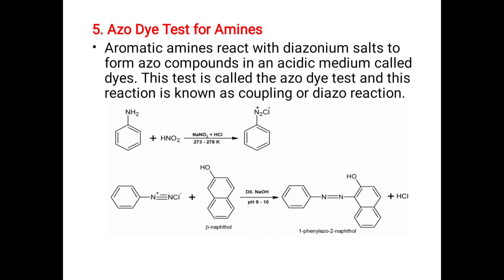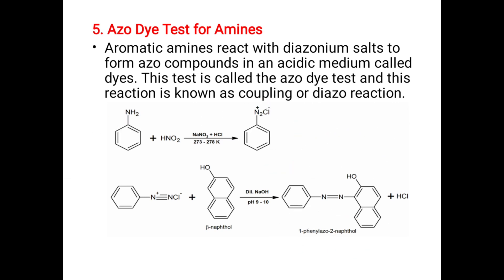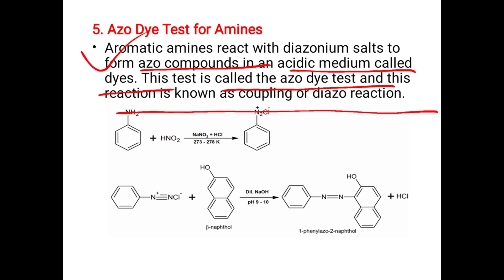Finally, the azo dye test for amines. Aromatic amines react to first form a diazonium chloride. This diazonium salt then reacts with β-naphthol to form an azo dye. This test is used to distinguish aromatic amines. The aromatic amine forms an azo compound in acidic medium, called a diazo coupling reaction. This reaction is shown as a coupling or diazo reaction.